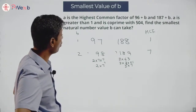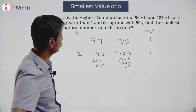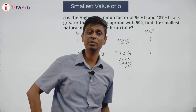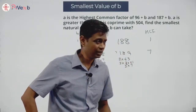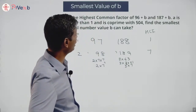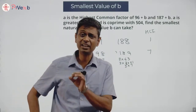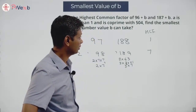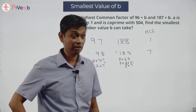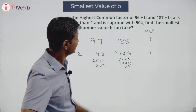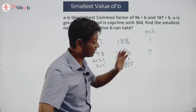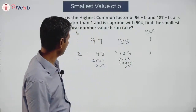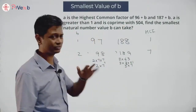A is greater than 1 and coprime with 504, meaning A has nothing in common with 504. Maybe A equals 7 is the answer, but I would be very disappointed if 7 and 504 share a common factor. If they do, then A cannot be 7, and B equals 2 doesn't work.